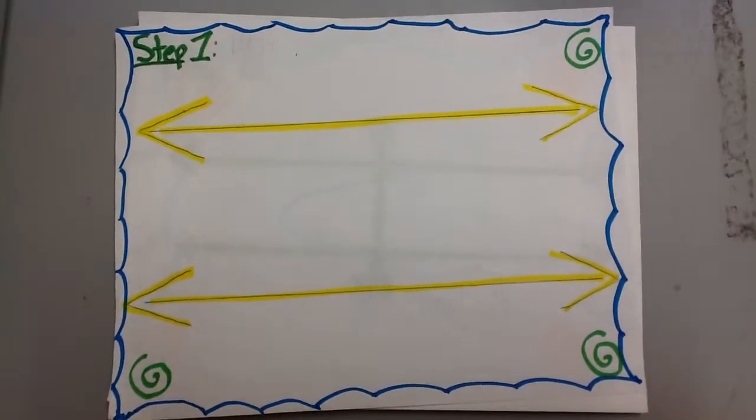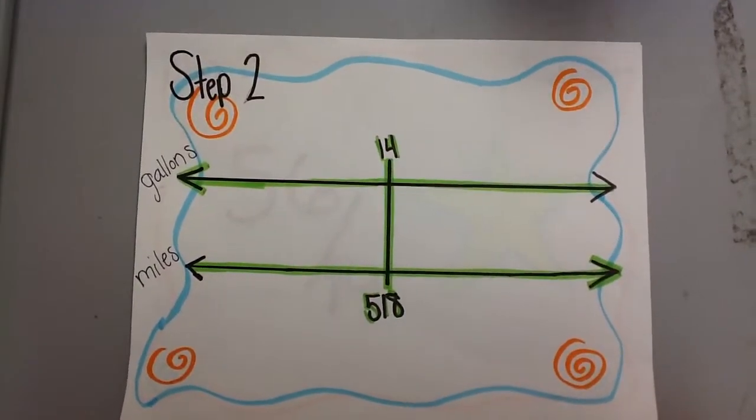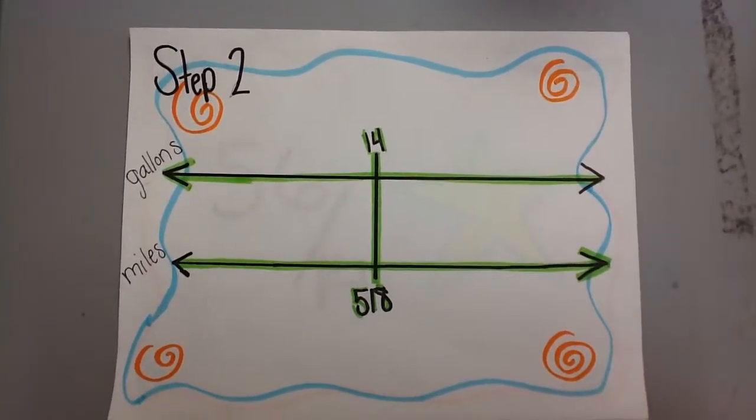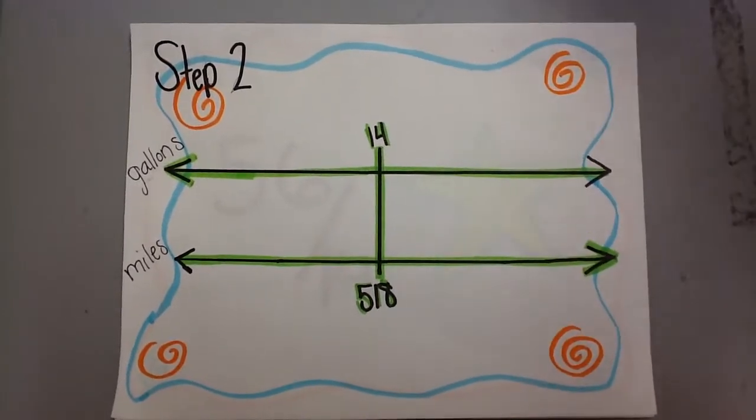So first you have to draw out the double number lines. Then you have to make a line in the middle of the number line and write 518 on the bottom and 14 on the top.